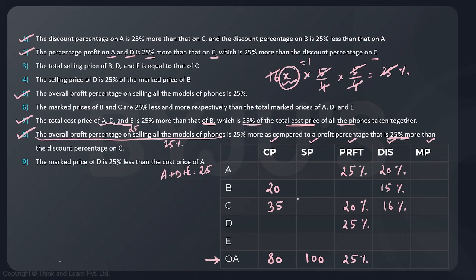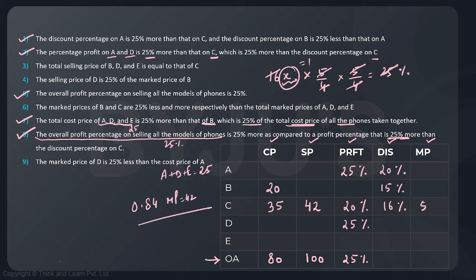Now moving to calculate values for model C: cost price is 35, profit percentage is 20%, discount is 16%. Selling price = 35 + 20% of 35 = 42. This 42 is the selling price after a 16% discount. So 0.84 × marked price = 42, giving marked price = 50. There are some statements we have not yet used — we will cover those one by one. Let us move to the last statement.